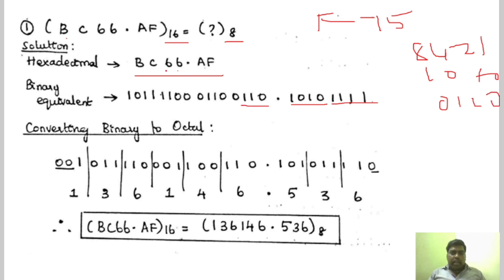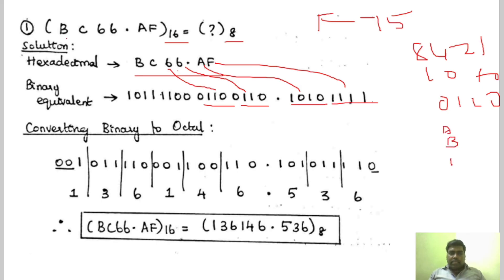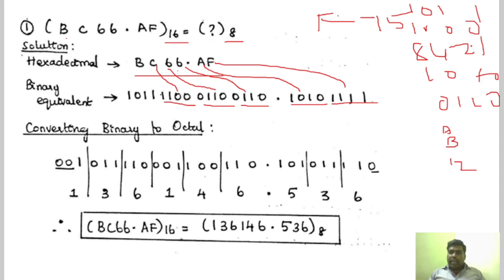And again for 6, it is 0, 1, 1, 0. The next one is C. A is 10, B is 11, and C is 12. So how will you write 12? It is 1, 1, 0, 0. And this is B again. B is 11, so for 11 you write 1, 0, 1, 1. This is how we write the equivalent binary value for each hexadecimal digit.